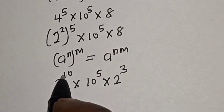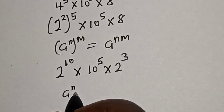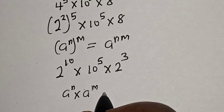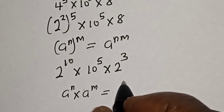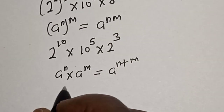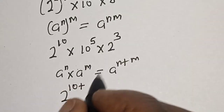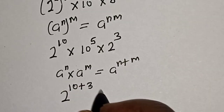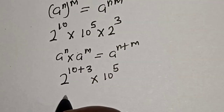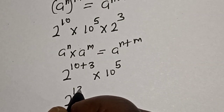Now these terms have the same base but different powers. Remember: if you have a raised to power n multiplied by a raised to power m, this is equal to a raised to power n plus m. So now we have 2 raised to power 10 plus 3, multiplied by 10 raised to power 5. Two raised to power 10 plus 3 is 2 raised to power 13.